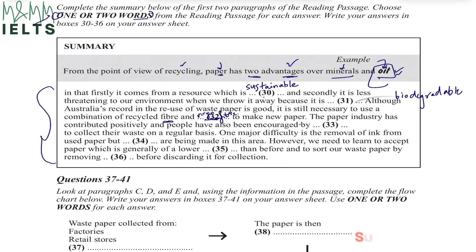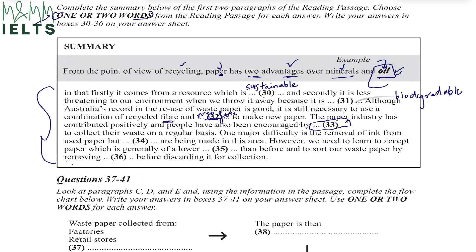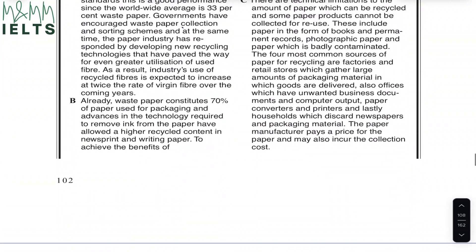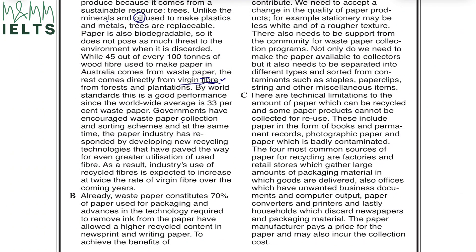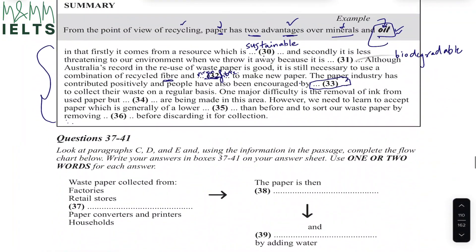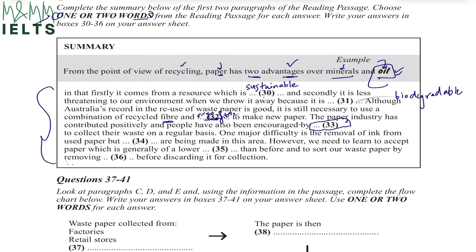Question 33 says: the paper industry has contributed positively, and people have also been encouraged by dash to collect their waste on a regular basis. We are looking for who encouraged the people. Reading on: governments have encouraged waste paper collection and sorting schemes, and the paper industry has responded by developing new recycling technologies that have paved the way for greater utilization of used fiber. So the answer for number 33 is 'government' — people were encouraged by the government to collect waste.